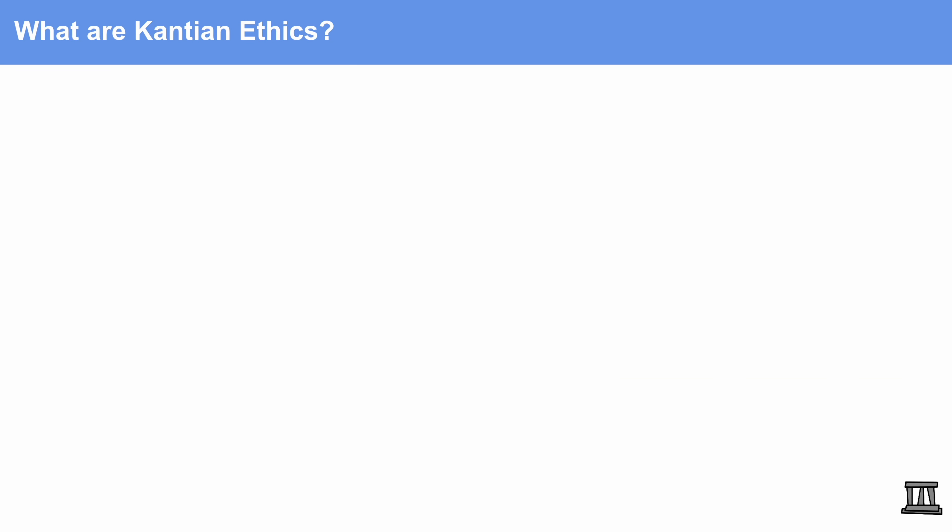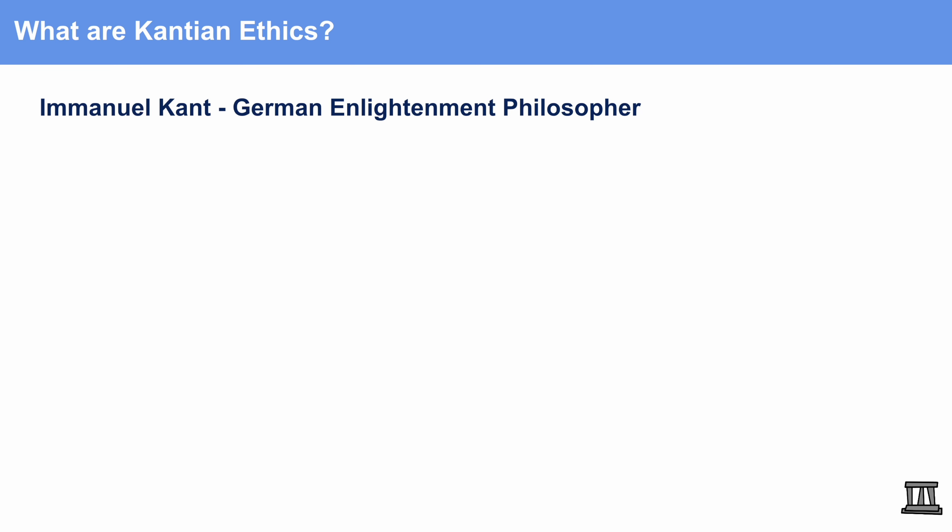What are Kantian ethics? Immanuel Kant, the person who made Kantian ethics, was a German Enlightenment philosopher. His ideas formulate into three separate categories. The first and easiest lens to view his framework through is the categorical imperative. This may sound like a pretty big term, but it's actually a pretty intuitive concept to understand.